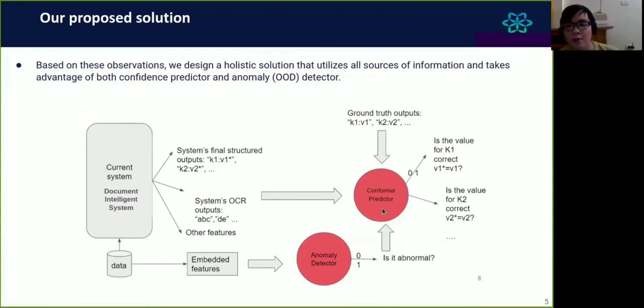This kind of feature will be the input for the conformal predictor. We also obtain the input data for the DIS, and from this input, you can extract some kind of image features. This feature will be the input for the second module, the anomaly detector. The anomaly detector will output a score in the range from 0 to 1 that indicates whether the input is normal or abnormal to the system. This score will be an additional input to the main conformal predictor. The conformal predictor will predict whether the DIS output is true or wrong. For example, for the key K1, the DIS output is V1 asterisk, and the ground truth for K1 is V1. The conformal predictor will try to predict whether V1 asterisk is equal to V1. In other words, the conformal predictor will predict whether the DIS prediction is true or wrong.